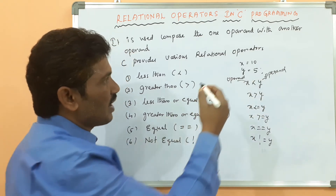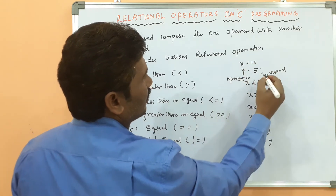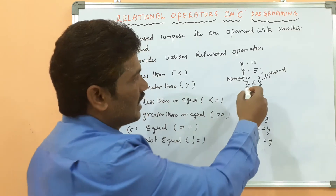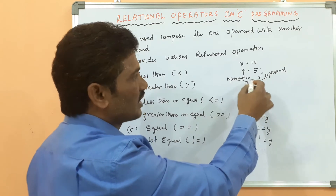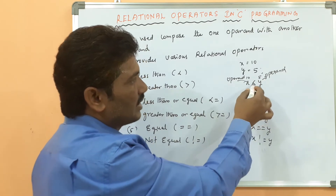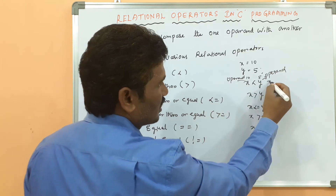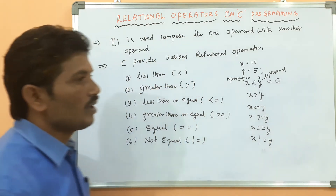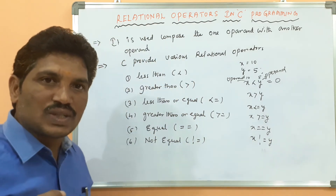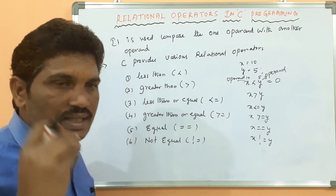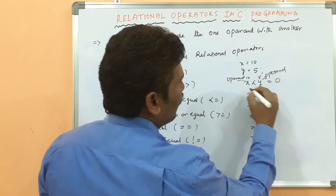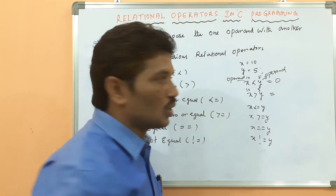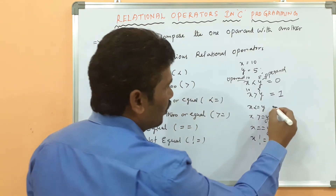For x less than y: x value is 10 and y value is 5. Is 10 less than 5? Because 5 is smaller than 10, y should be bigger, so the condition is false — it returns 0. If condition is true it returns 1; if condition is false it returns 0. For x greater than y: 10 greater than 5, condition is true, which returns 1.